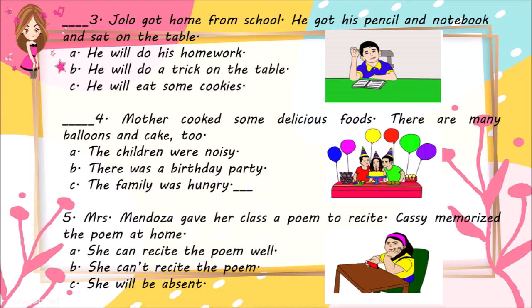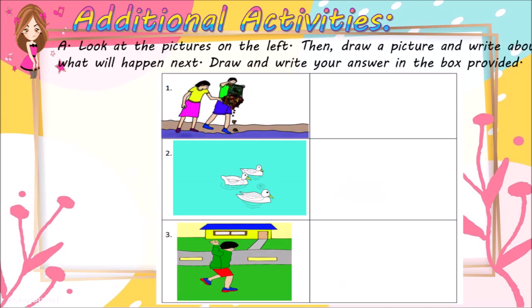Number 5: Mrs. Mendoza gave her class a poem to recite. Cassie memorized the poem at home. A. She can recite the poem well. B. She can't recite the poem. C. She will be absent. Look at the pictures on the left, then draw a picture and write about what will happen next. Draw and write your answer in the box provided.